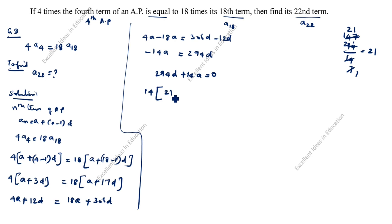So, here is 21d plus a is equal to 0 by 14. 21d plus a is equal to 0.